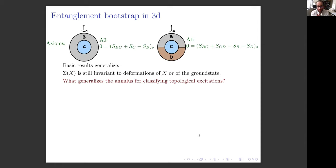Now we can pose a version of the axioms in three dimensions. Surprisingly, it's simple: we impose exactly the same two conditions. The only difference is that I'm speaking about volumes of revolution—you take the 2D picture and rotate it about an axis. So C is now a ball and B is a spherical shell surrounding it, and we demand the reference state satisfies this condition again. The ball and B and D are also balls that combined together form a spherical shell. The basic results starting from these 3D axioms generalize: the information convex set of a region is still invariant under deformations that don't change the topology.